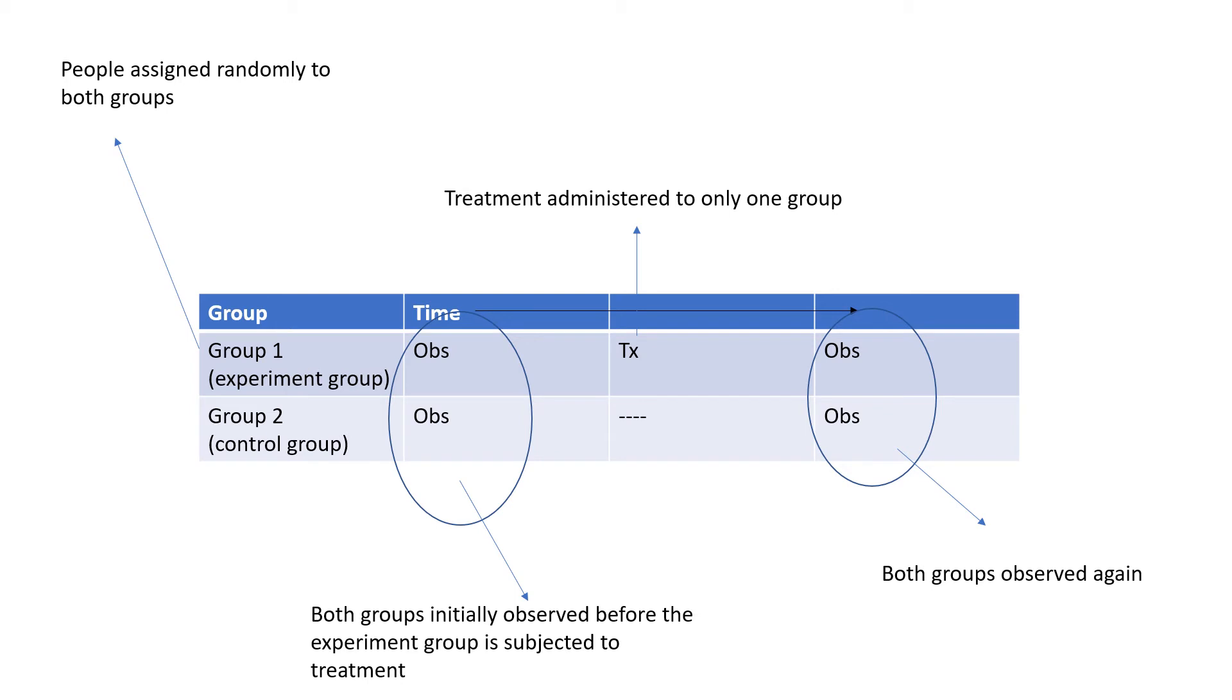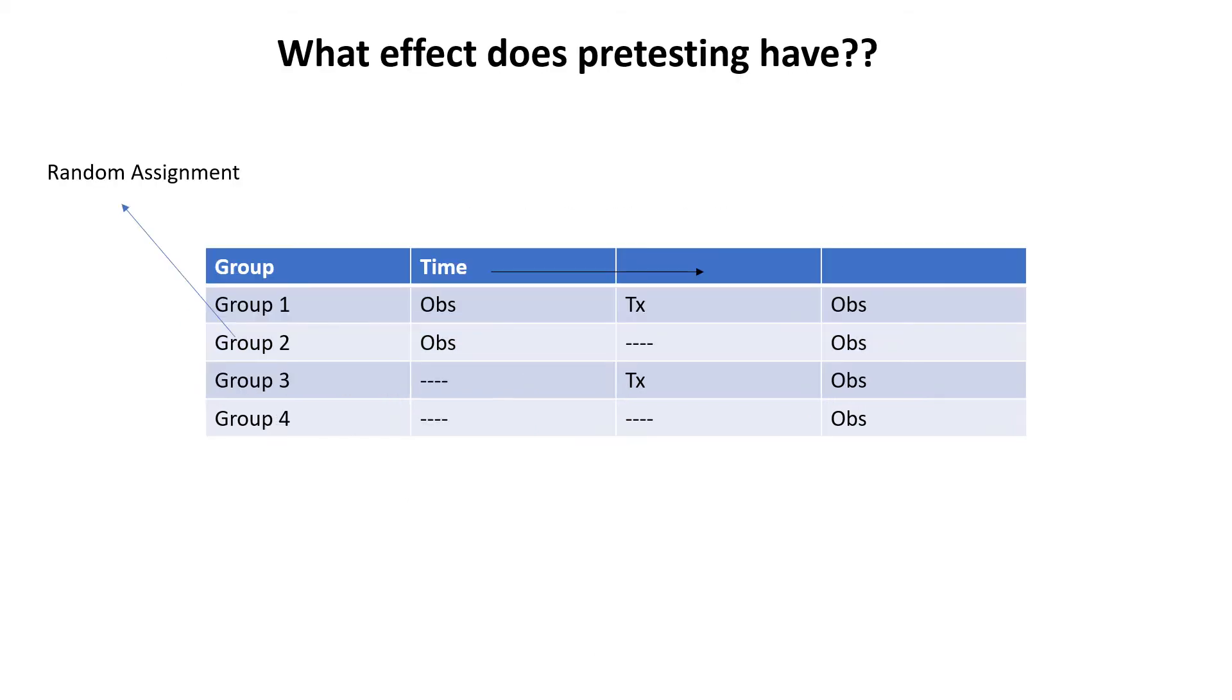Now to address the question, 'What effect does pre-testing have?', Solomon in 1949 proposed an extension of this pre-test post-test control group design. This design involved four groups, as you see on your screens. These four groups were also randomly assigned, of course, but two additional groups were assigned who were not pre-tested, and this provided a particular advantage.